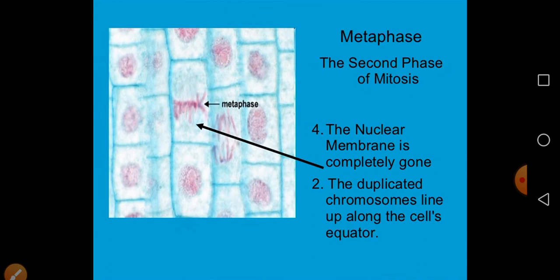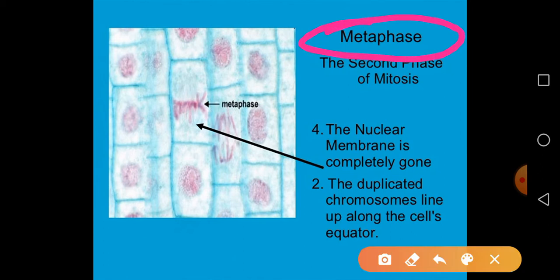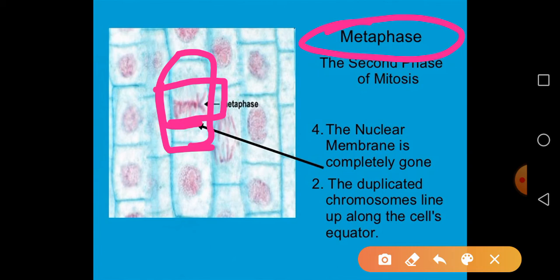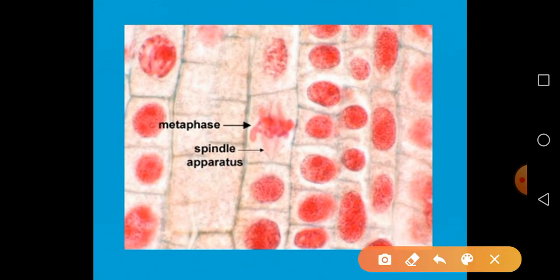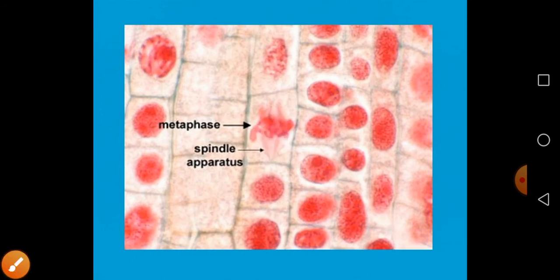The second phase of the mitotic phase is metaphase. Here, the nuclear membrane is completely broken down and the duplicated chromosomes are aligned at the equatorial position. The spindle apparatus arises from the centrosome and attaches to the chromosomes. This is a very important phase of the cell cycle.